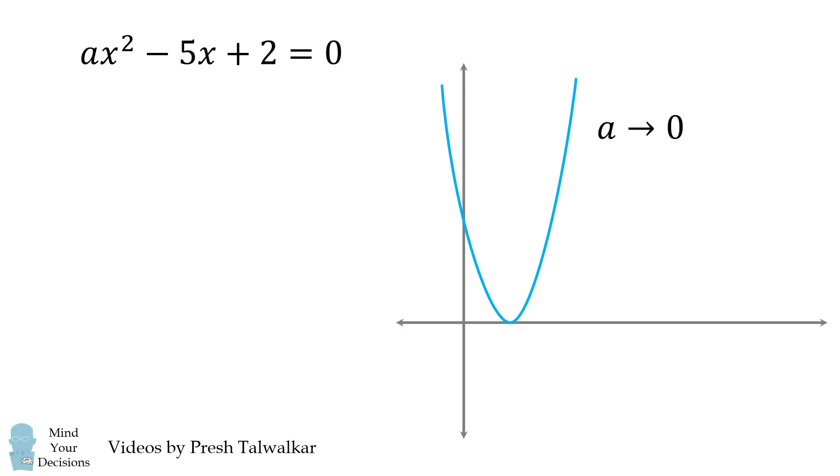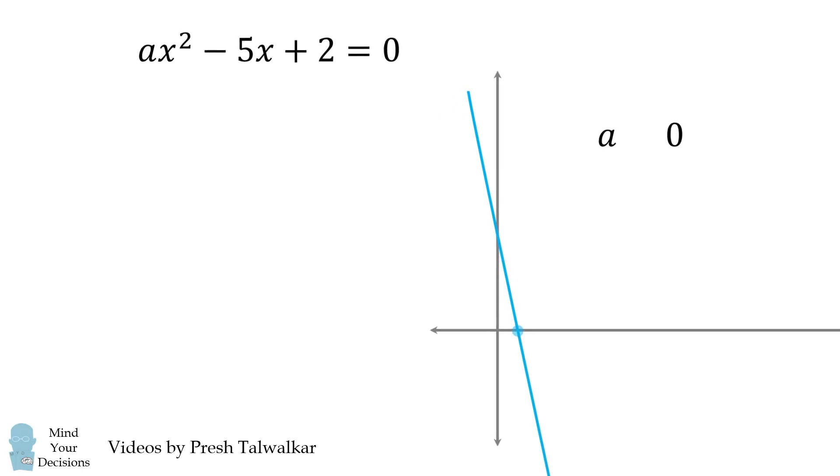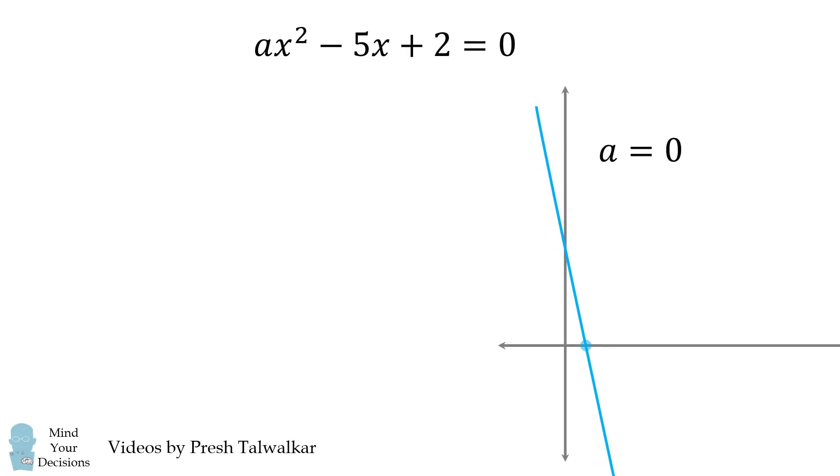Now if we vary this parameter a and let it go to 0, this parabola will eventually become a linear equation at a = 0. And this will give us one solution. The other solution will be when the discriminant is equal to 0 and a = 25/8.